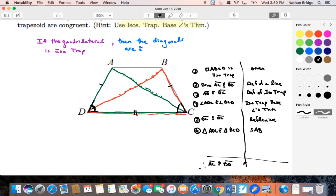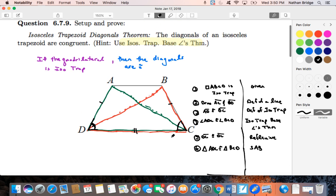D. Because the corresponding parts of congruent triangles are themselves congruent. So again, real recap, what do we have to do?